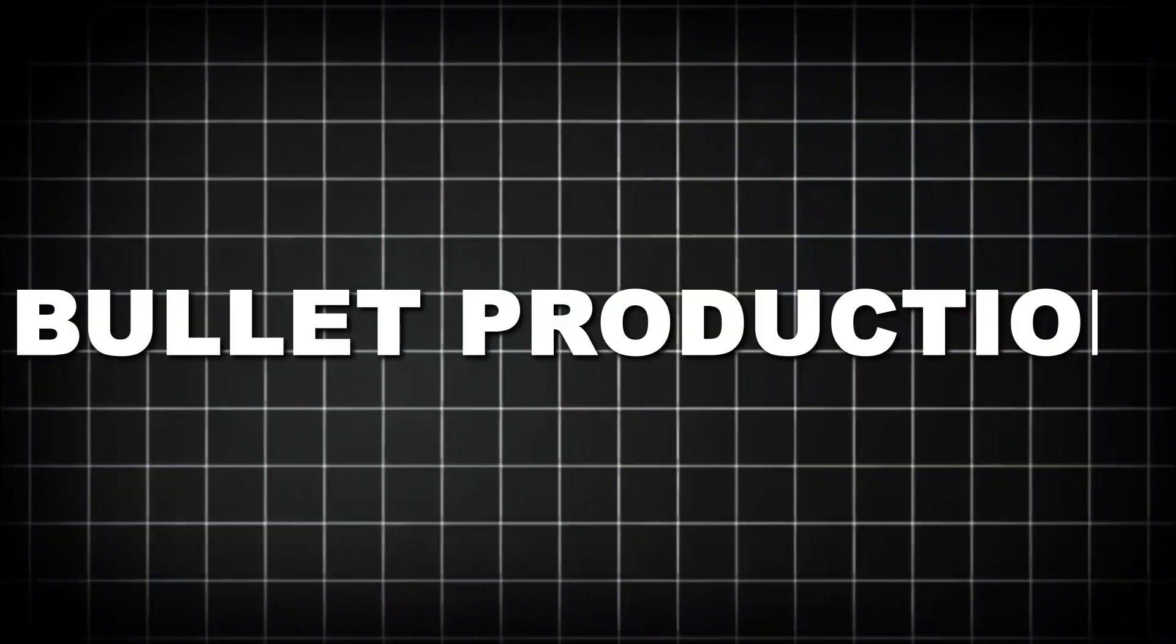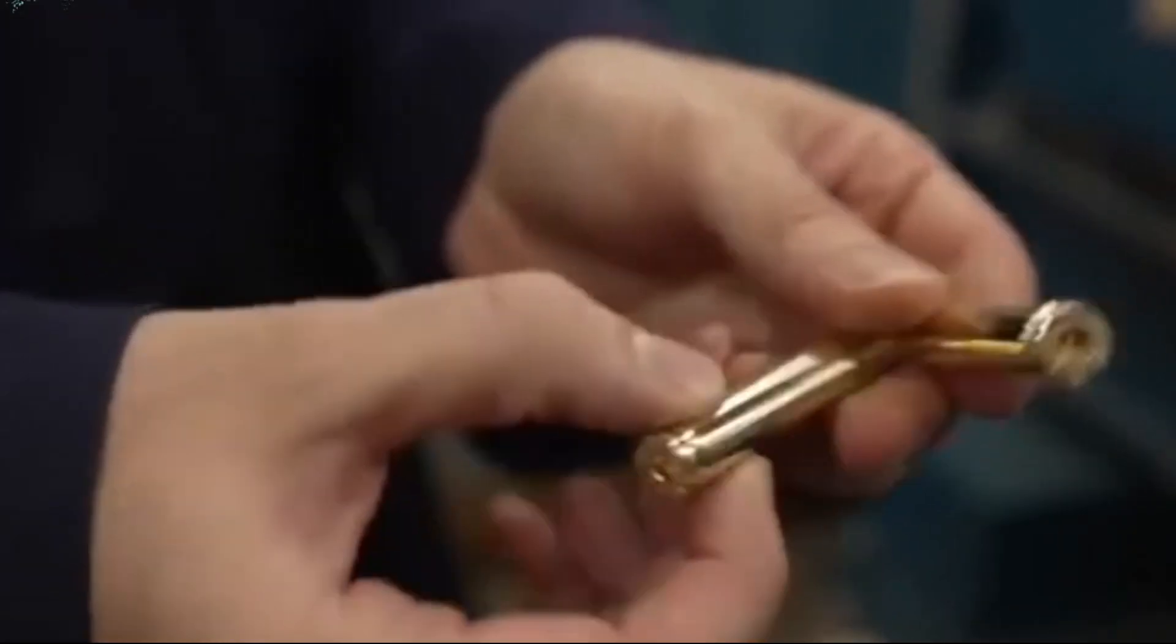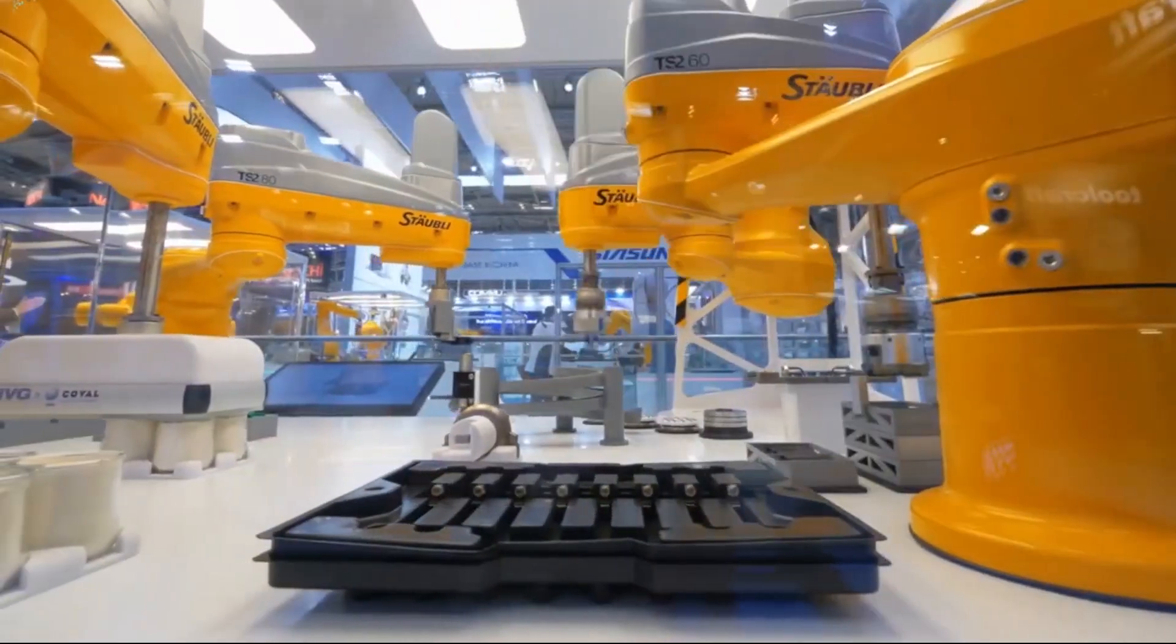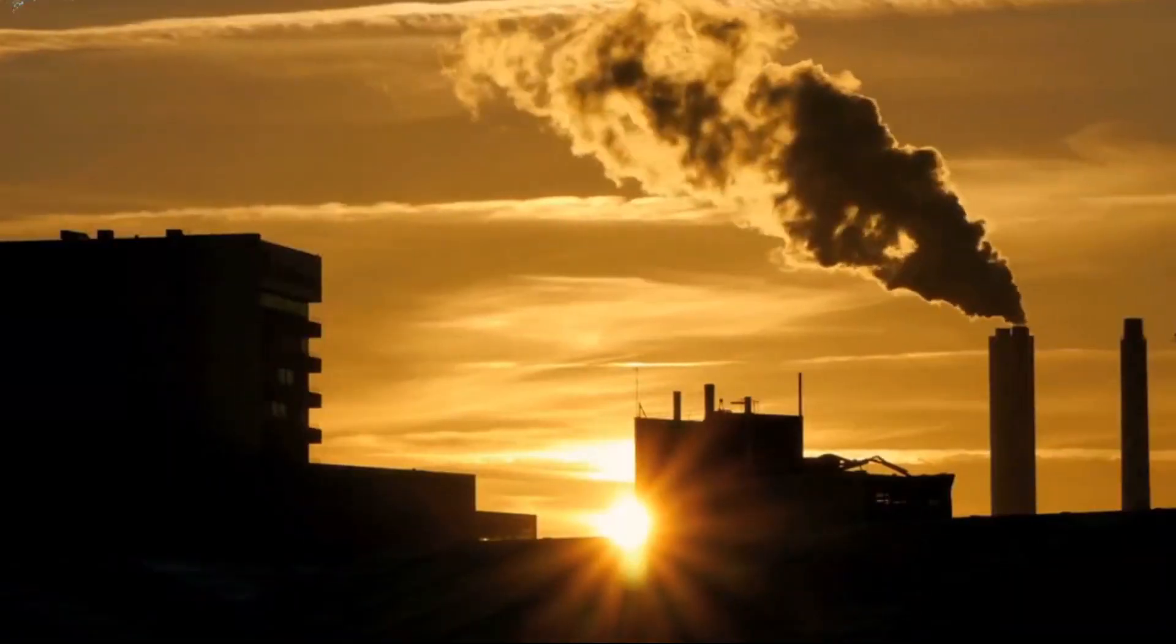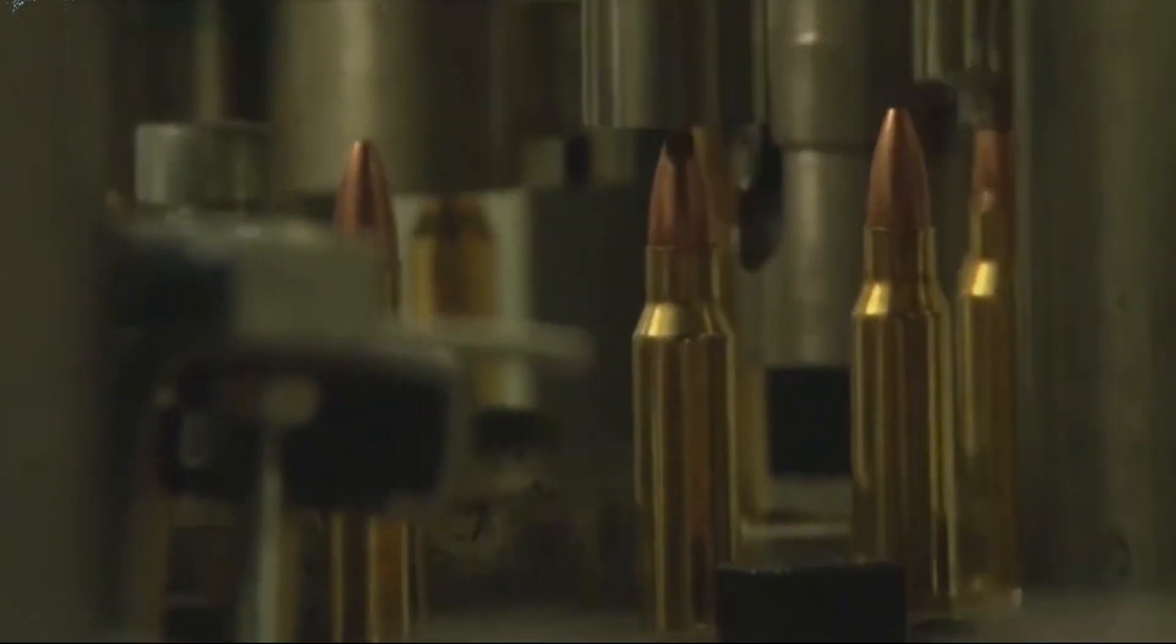While the cases are being formed, a parallel process creates the bullets themselves. The exact method varies depending on the type of bullet being produced, but most follow similar principles. For traditional lead bullets, the process begins with lead wire or slugs fed into powerful presses that force the soft metal into bullet-shaped dies.